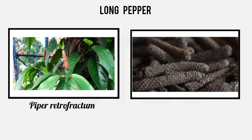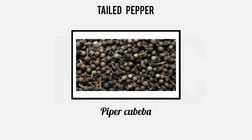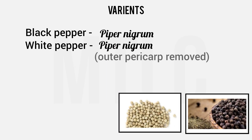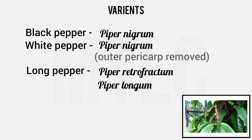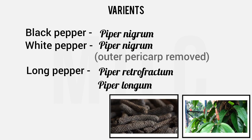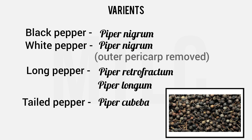Long pepper refers to Piper retrofractum and Piper longum. Tailed pepper is Piper cubeba, which is another variety. To summarize the names: white pepper and black pepper both come from Piper nigrum; long pepper is Piper retrofractum and Piper longum; tailed pepper is Piper cubeba.